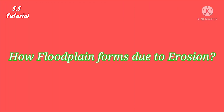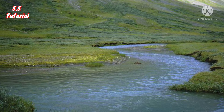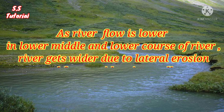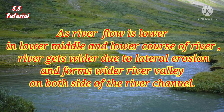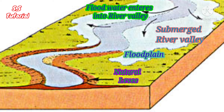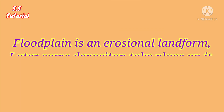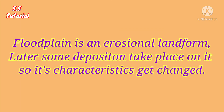Let's know how flood plain forms due to erosion. In the lower middle and lower course of a river where river gradient is lower, river flow is also lower and the river gets wider due to lateral erosion, forming a wider river valley on both sides of the river channel. This wider river valley remains submerged by flood water in the rainy season and here sedimentation takes place. It is called flood plain because of the predominance of flood stored deposits. So we can say flood plain is an erosional landform, but later sediments are deposited on the flood plain by flood water, which changed its characteristics.